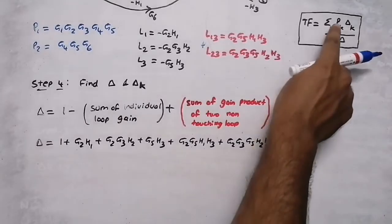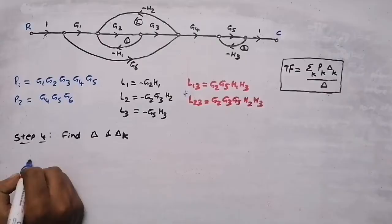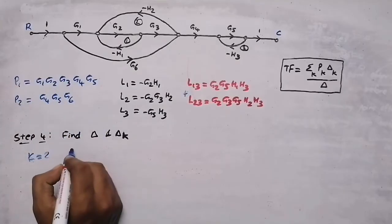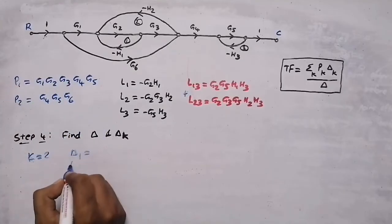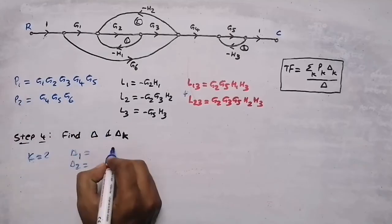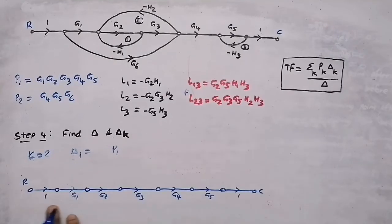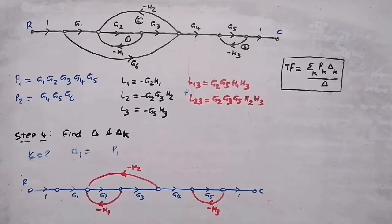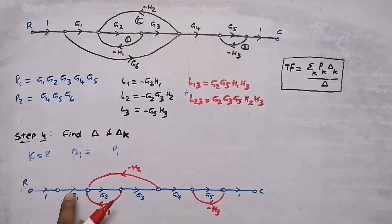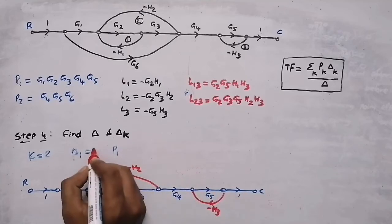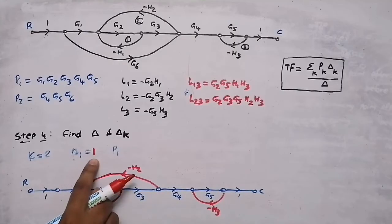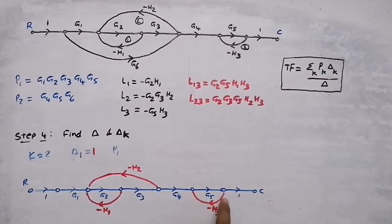Now we find Δk. Since k = 2, we need Δ1 and Δ2. For Δ1, we take the first forward path P1 = g1·g2·g3·g4·g5. All three individual loops are touching this forward path, so Δ1 = 1.